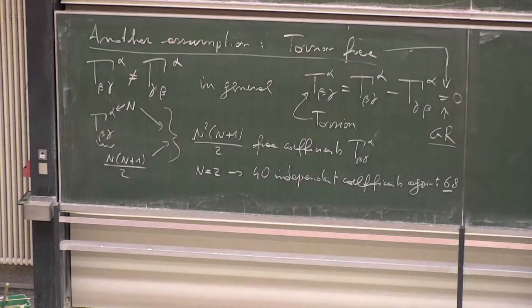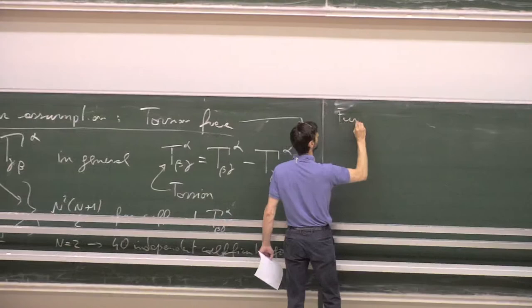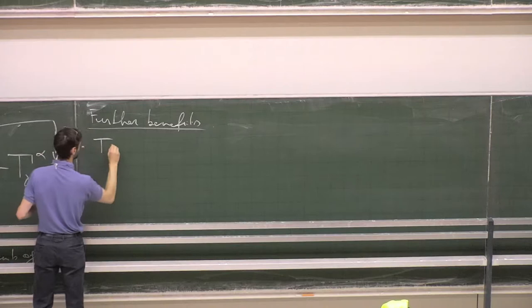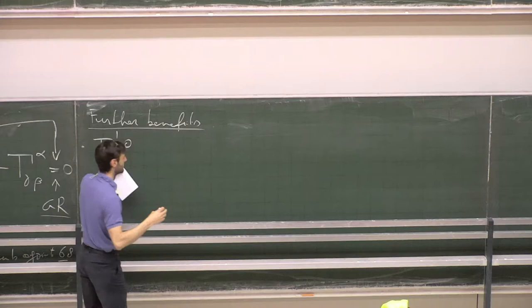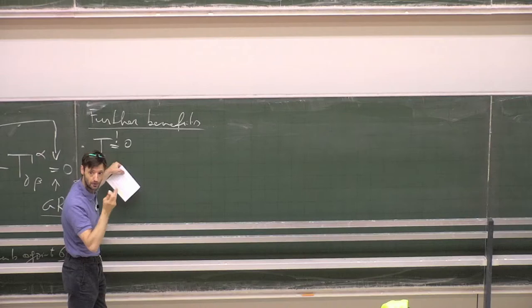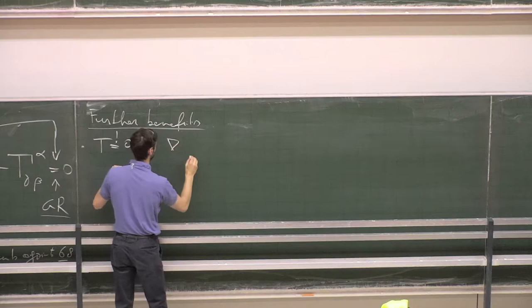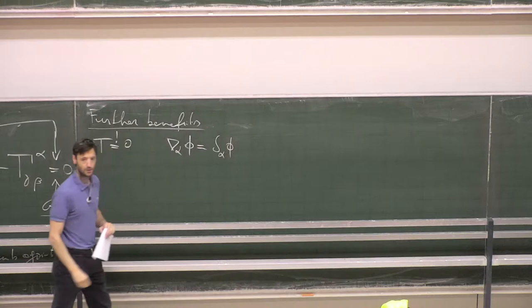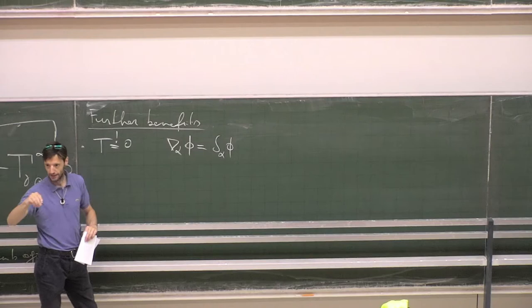We have further benefits from torsion-free on our equations. For example, if we assume the torsion to be zero, then we have that the covariant derivative is commutative for scalars. Because if we have a scalar function and we compute its covariant derivative, we have seen that this is equal to the standard derivative.